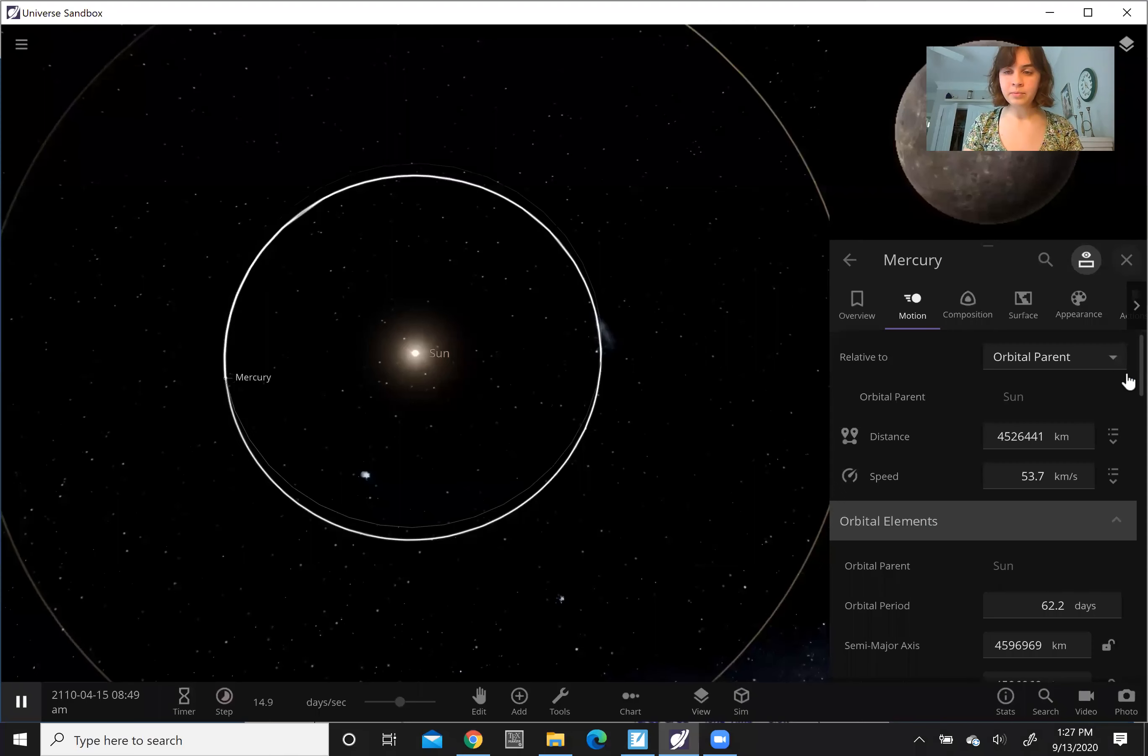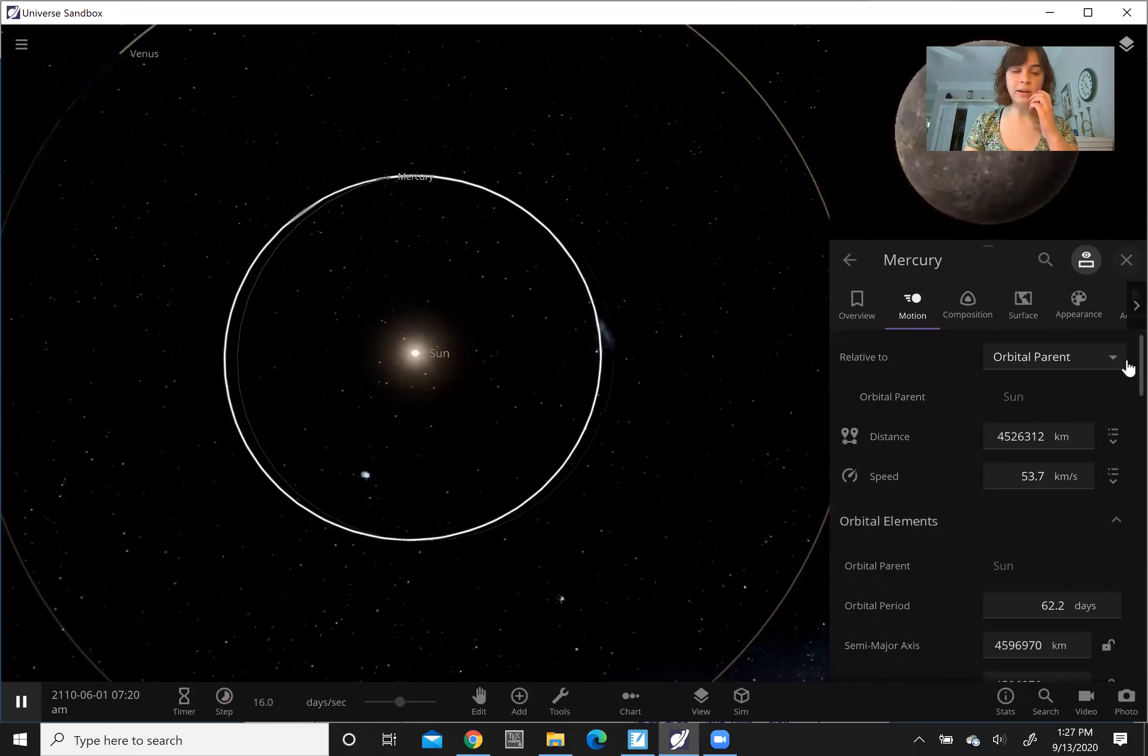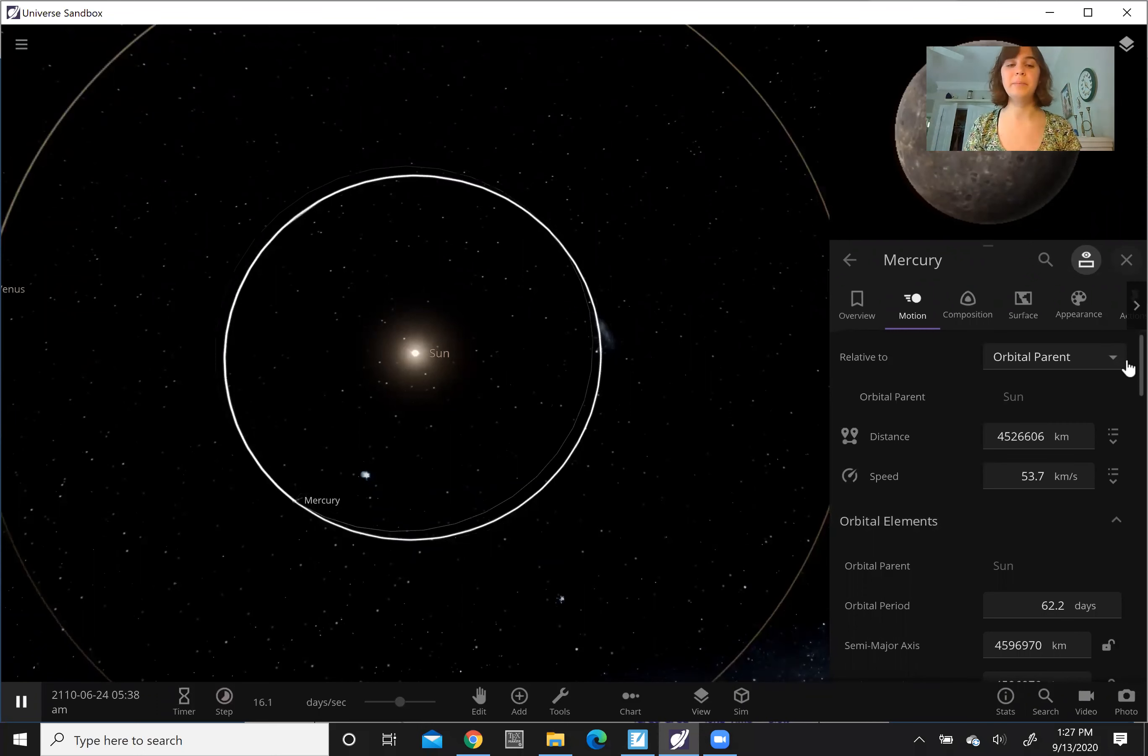That's how planets cover equal areas in equal amounts of time. When they are closer to the sun, closer to that focus, the slices kind of increase longer distance. So in order to cover it in that equal amount of time, it has to go faster. And we were able to see that with Mercury.